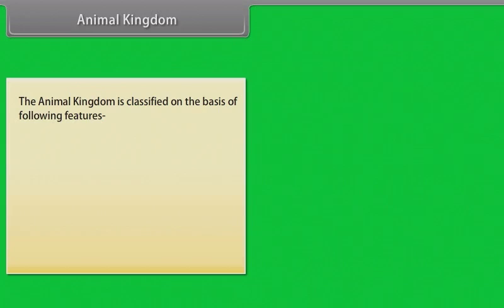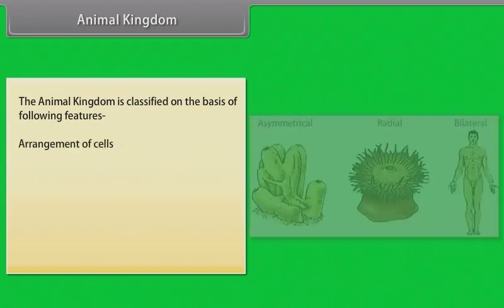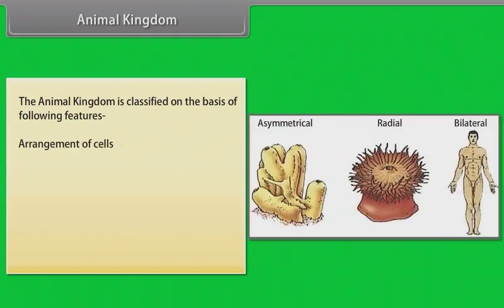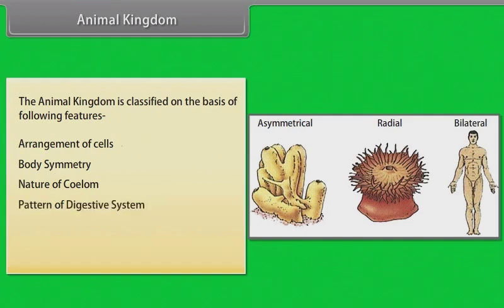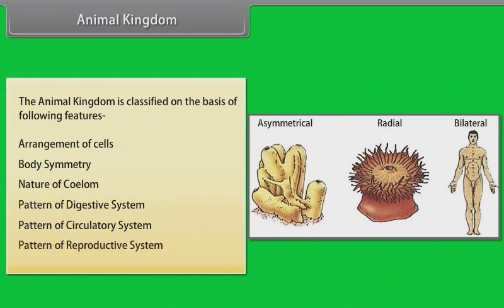The animal kingdom is classified on the basis of the following features: arrangement of cells, body symmetry, nature of coelom, pattern of digestive system, pattern of circulatory system, and pattern of reproductive system.